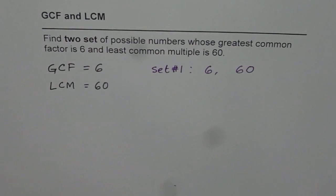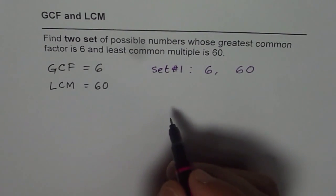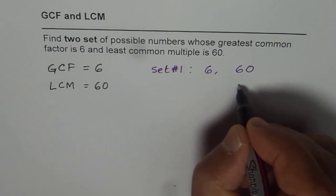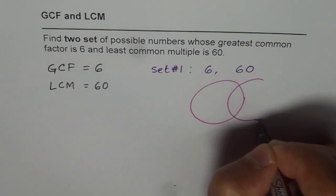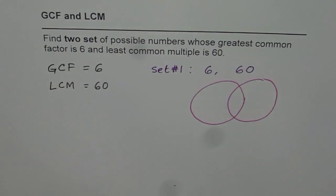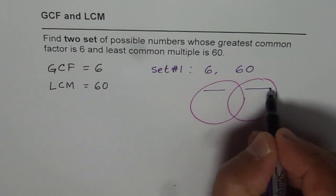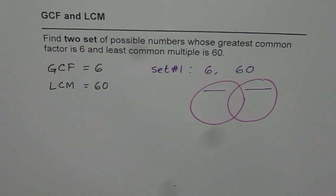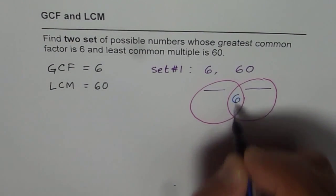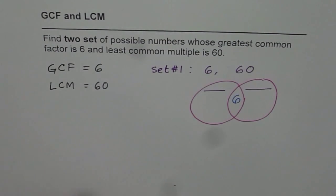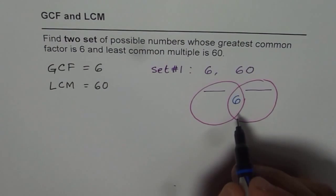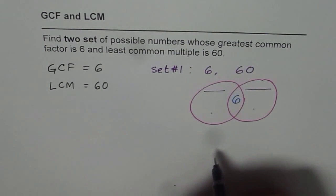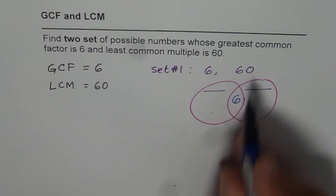That is set number 1. Now how do we get the second set? That is the trickier part. To get the second set, let us consider the Venn diagram — we will make two circles. These two circles represent factors of our numbers which we need to find. What we know is that the greatest common factor is 6, so the number in the middle is 6. And the least common multiple is 60, meaning if I multiply 6 by some numbers, the product of all those numbers should be 60.